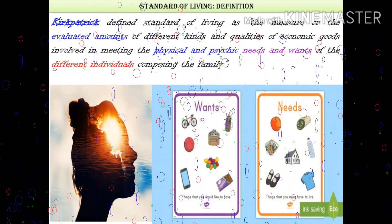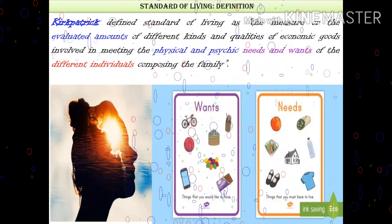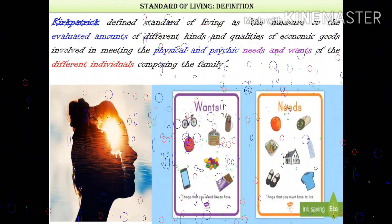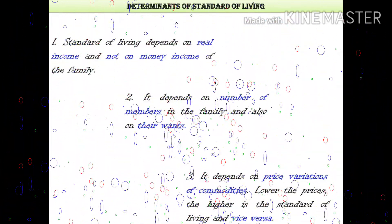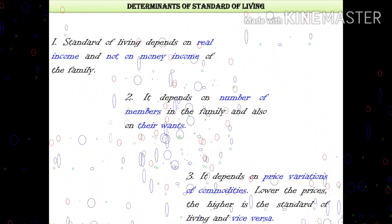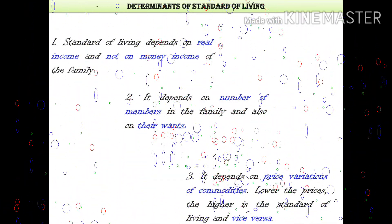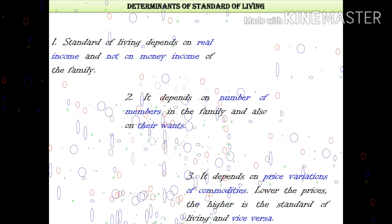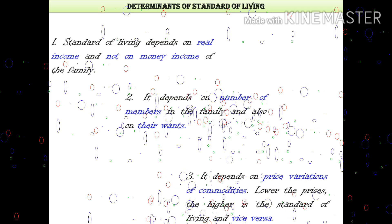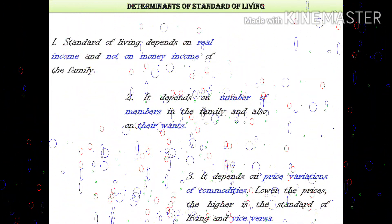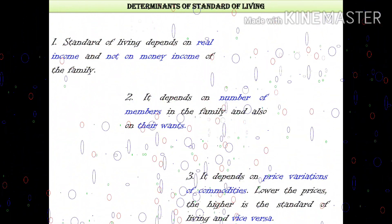What about the mental and physical level? Standard of living depends on the number of members in the family and also their wants. It also depends on the price variation of the commodity. Lower the price, the higher is the standard of living. Vice versa, higher the price, the lower is the standard of living.